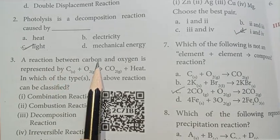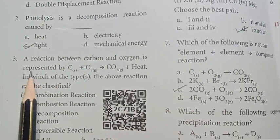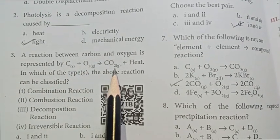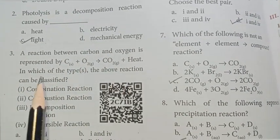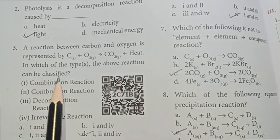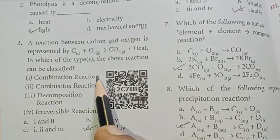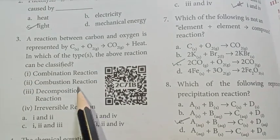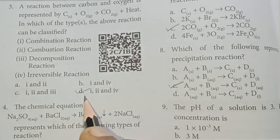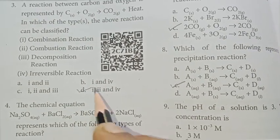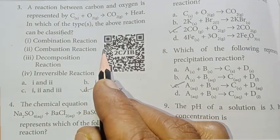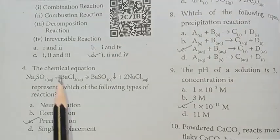Third one: a reaction between carbon and oxygen is represented by carbon plus oxygen gives CO2 plus heat. The above reaction can be classified as combination, combustion, or irreversible. Answer is D option: 1, 2, and 4 — that is combination, combustion, and irreversible.